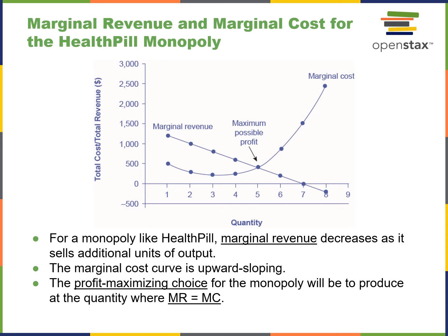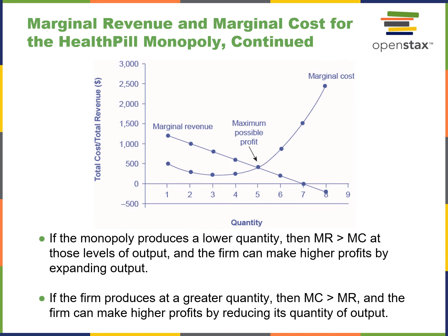For the health pill example, marginal revenue decreases as the firm sells additional units of output, so the marginal revenue curve is downward sloping, while the marginal cost curve is upward sloping. The profit-maximizing choice is where MR equals MC — that is the maximum possible profit. The graph shows that at that given point, that's the maximum profit where marginal revenues equal marginal costs.